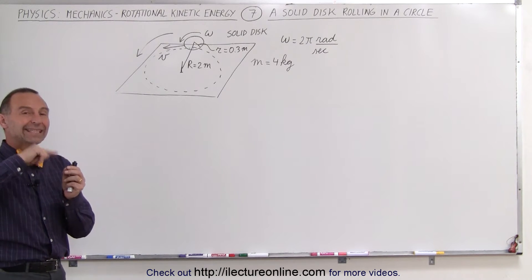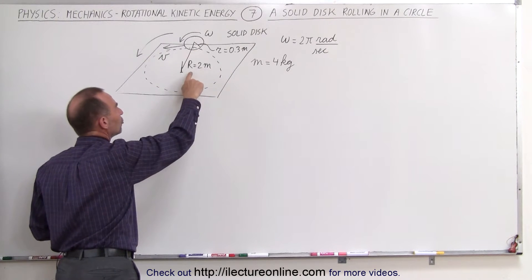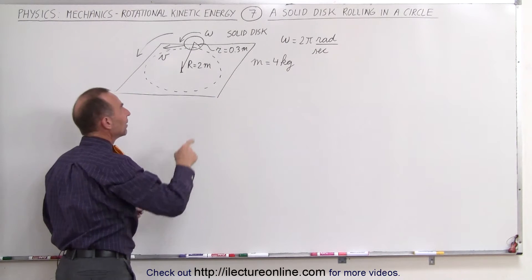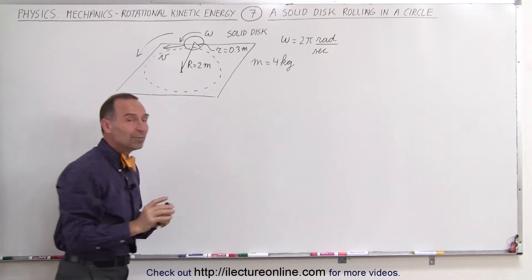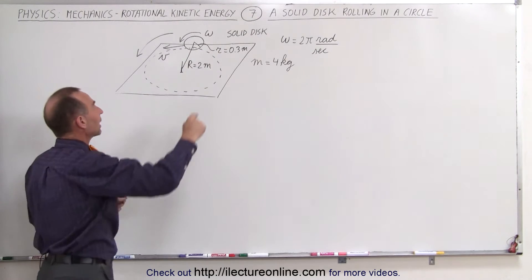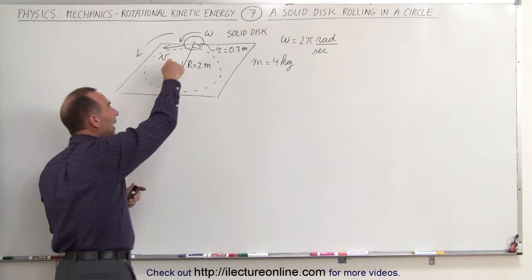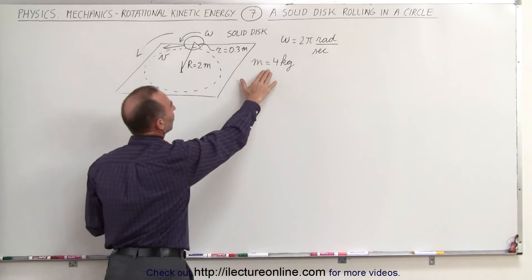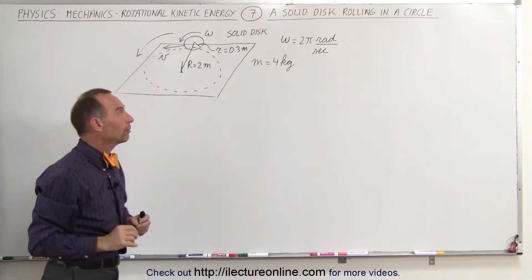Here we have a rotating disk that's rolling around in a circle. The radius of the circle is 2 meters. The radius of the disk is 0.3 meters. Because it's going around the circle, it also rotates on its axis, which means it will have translational kinetic energy by rolling around the circle and rotational kinetic energy by rotating about its own axis. Notice that the mass of the disk is 4 kilograms. It is a solid disk. We need to know that for the moment of inertia.